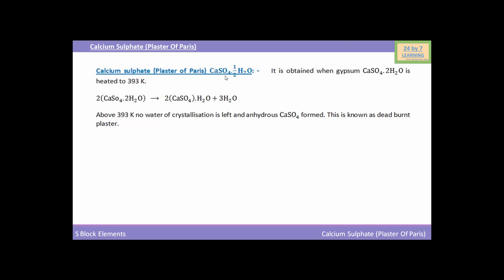Its formula is CaSO4·½H2O. This calcium sulfate is obtained when gypsum, i.e. CaSO4·2H2O, is heated to 393 Kelvin temperature. Here is the reaction for this.